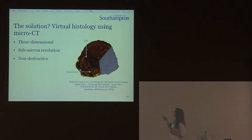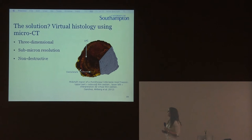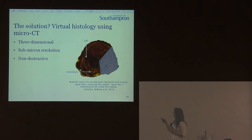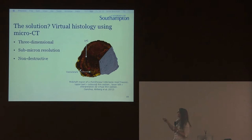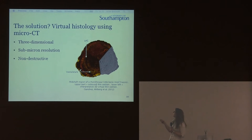My answer is to use micro-CT, using a virtual approach which is also non-destructive — great for fossils. With micro-CT we can get sub-micron resolutions, which is the resolution you'd need for histology, non-destructively. This image shows a standard histological thin section alongside micro-CT images of the same thing, and you can see all the same features — the lines of arrested growth, the same sort of resolution — but without damaging the fossil at all. And you can project that in three dimensions.